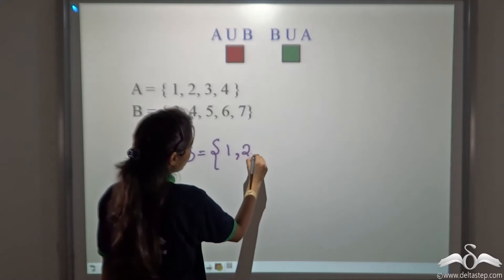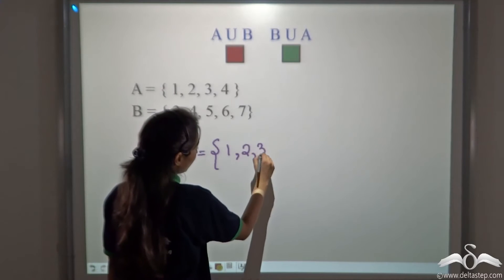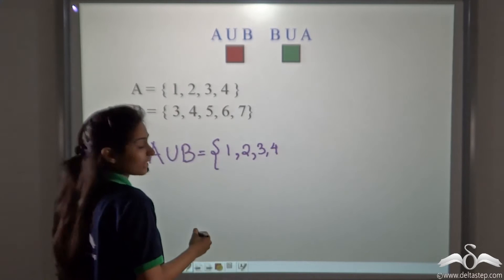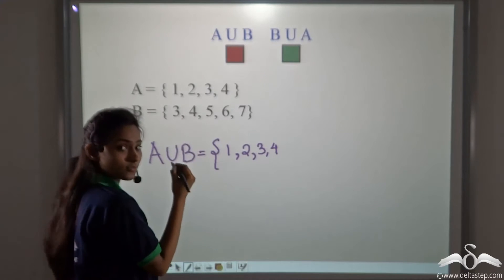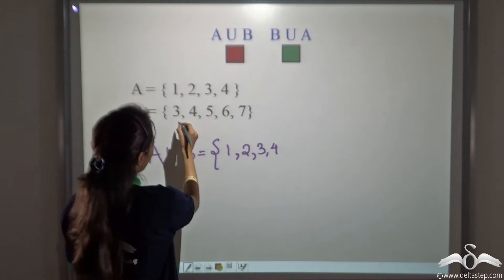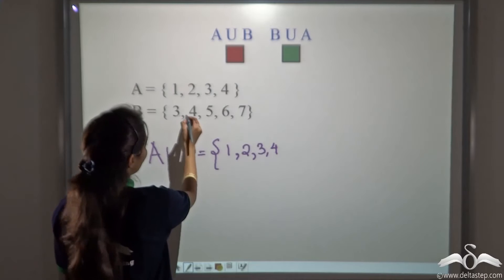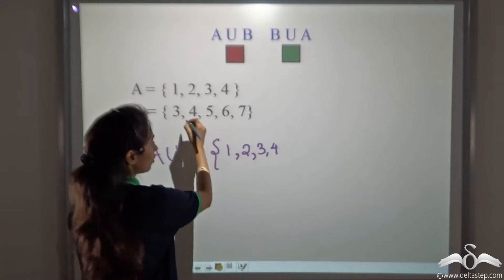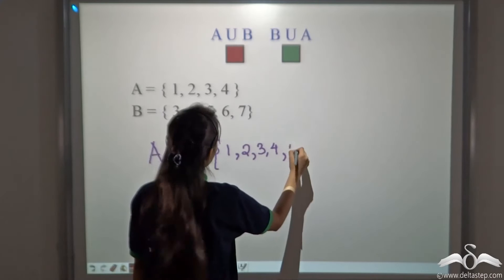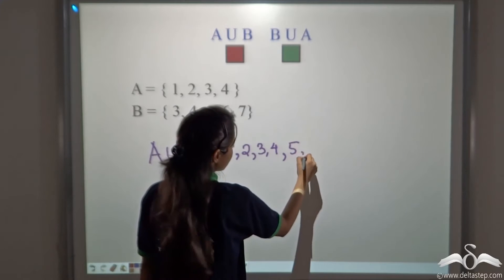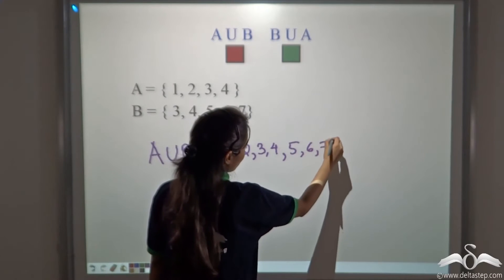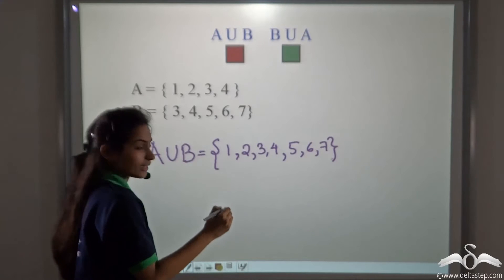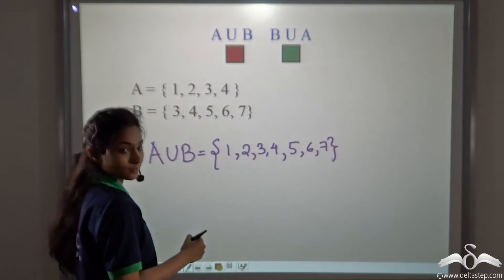So A union B gives us 1, 2, 3, 4 — we have listed the elements of set A. Now we will list the elements of set B. Now 3 and 4 are already repeated here, so we will not write them again — just 5, 6 and 7. So we have correctly written all the distinct elements in both the sets.